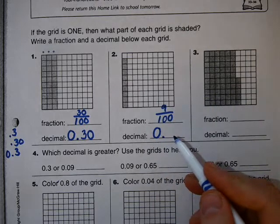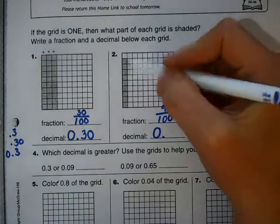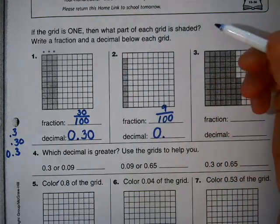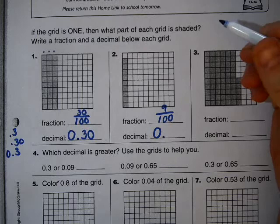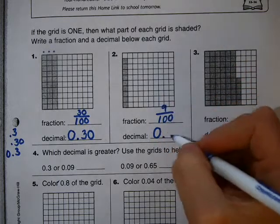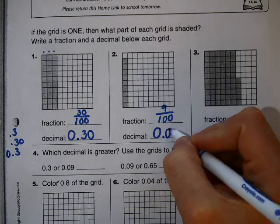that means you have 9 rows or 9 columns shaded in. You only have 9 hundredths, which means you have to write 0.09.